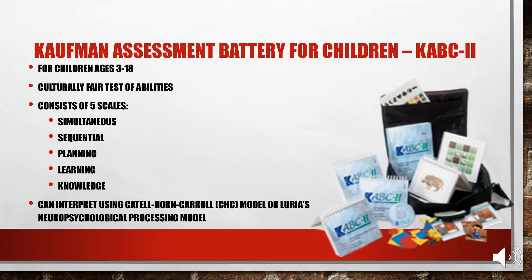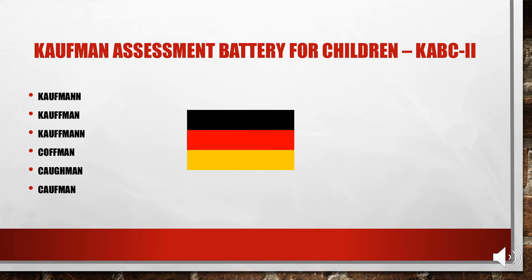The Kaufman Assessment Battery for Children, KABC-2, is used for children ages 3 to 18. It's supposed to be culturally fair, and it consists of five scales: simultaneous, sequential, planning, learning, and knowledge. You can interpret it two ways: using the Cattell-Horn-Carroll CHC model of cognitive abilities, or — if measures of crystallized intelligence like vocabulary wouldn't be appropriate for cultural or other reasons — using Luria's Neuropsychological Processing Model. To remember it's culturally fair, just think of the last name Kaufman, which can be spelled a million different ways depending on what country you're from. How culturally fair!